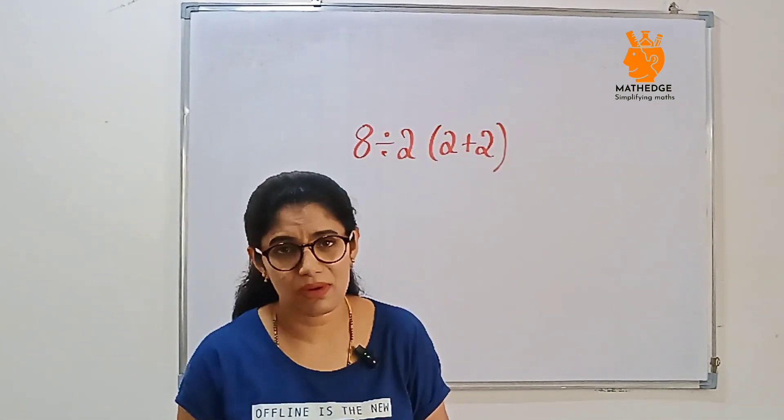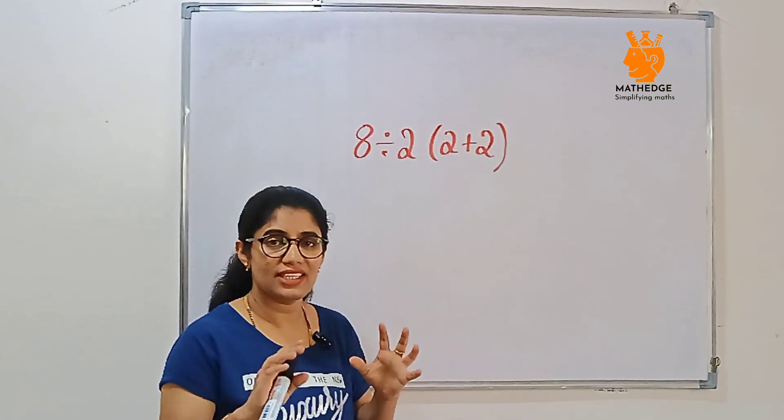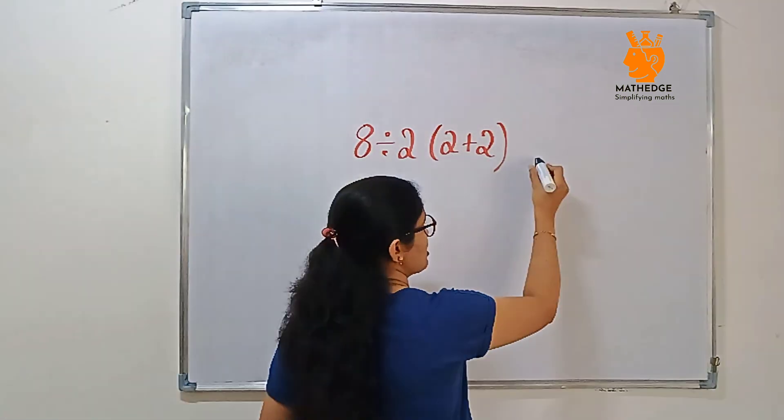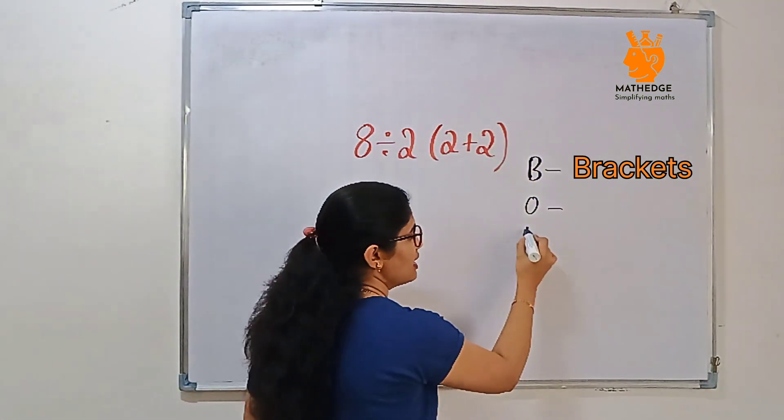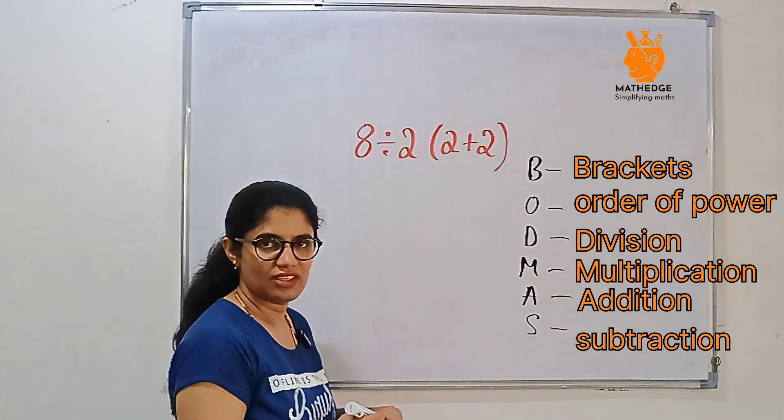Most of the people get this problem as wrong answer. Let's break it down with the logic and how we should solve with the BODMAS. Let's write first what's BODMAS. B means brackets, O means of or division, multiplication, addition and subtraction.